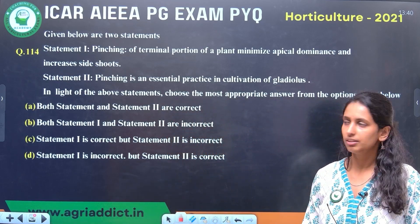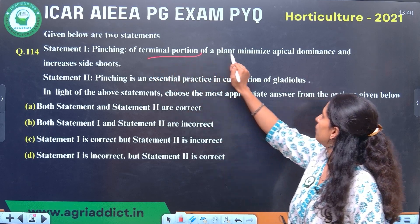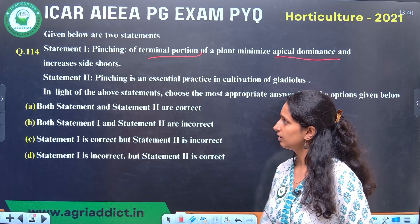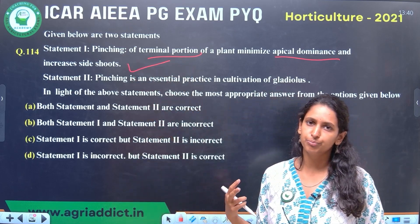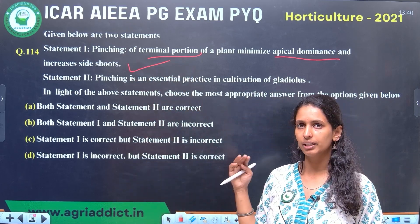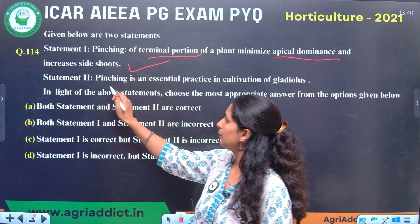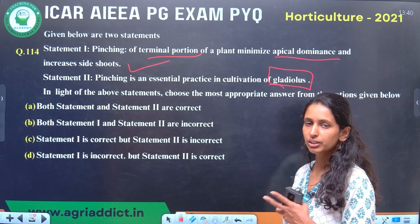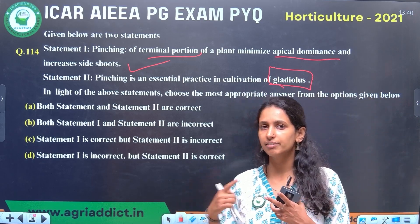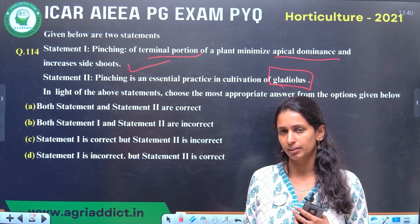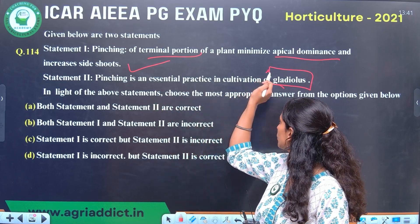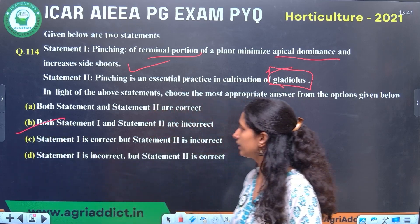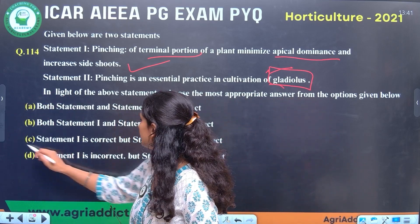Statement type question. Statement 1: pinching of the terminal portion of a plant minimizes apical dominance and increases side shoots — this is true. Statement 2: pinching is an essential practice in cultivation of gladiolus — this is incorrect; it is not an essential practice in gladiolus. So statement 1 is correct and statement 2 is incorrect. The correct answer is C.